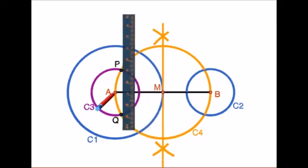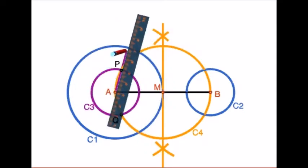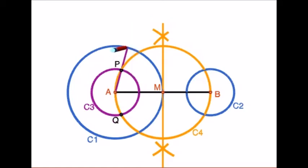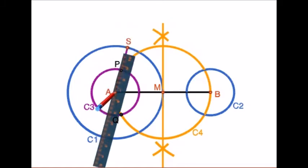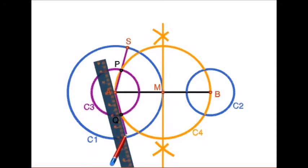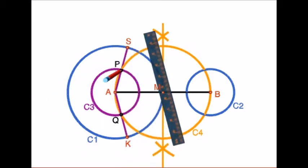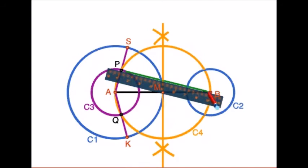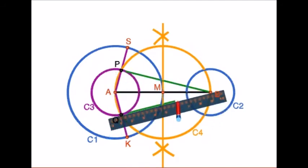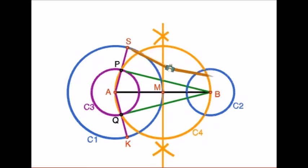Draw a line AP and extend it till circle C1 — name this point as S. Similarly, draw a line AQ and extend it till C1 — name it as K. Now join the points P and B. Similarly join Q and B.